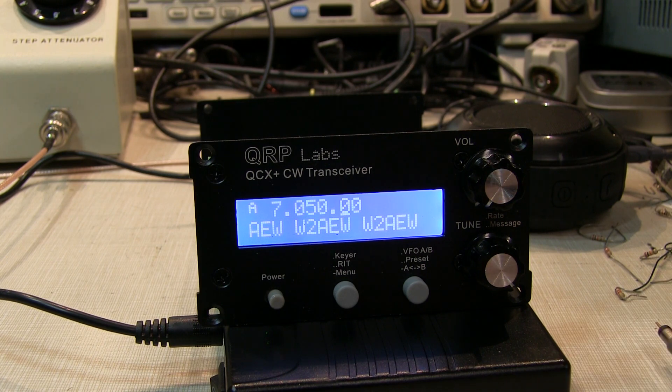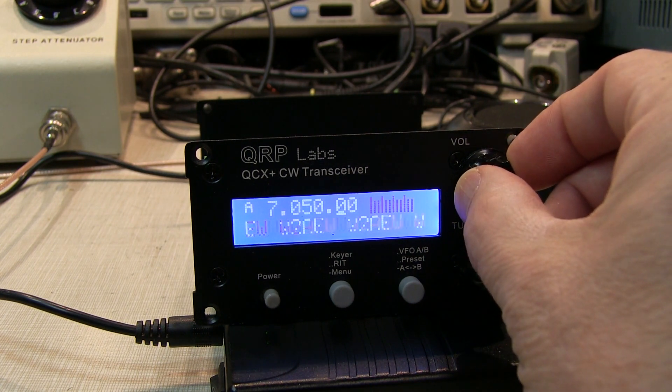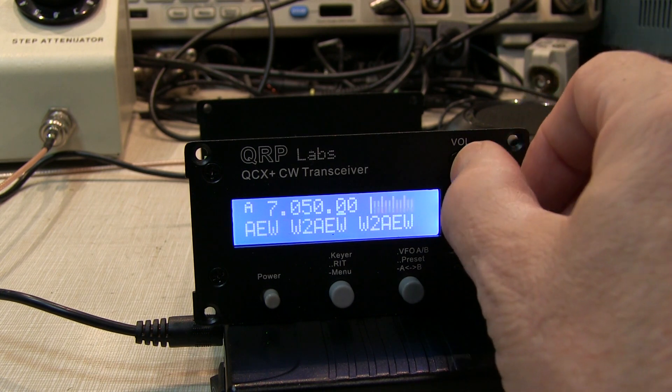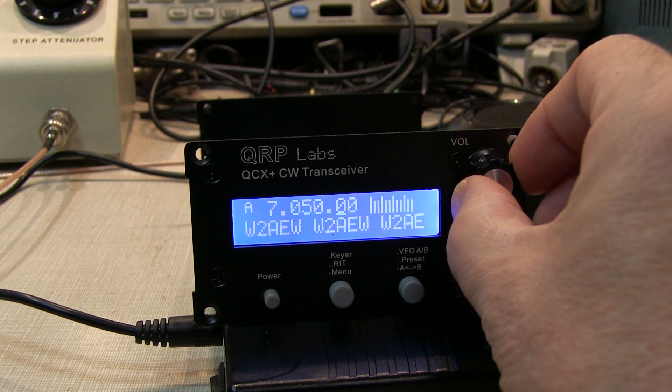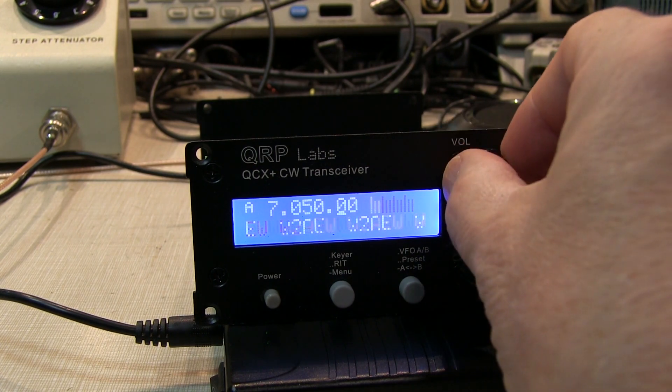The problem that it has though is it's very sensitive for these low level signals, but it also doesn't have any automatic gain control, meaning that if you've got the volume dialed up to listen to a very low level signal and a very strong signal comes in, you'll get blasted by the volume of it because there's nothing to control that volume. So an automatic gain control circuit can really help with that.